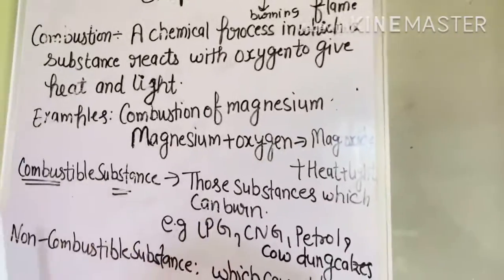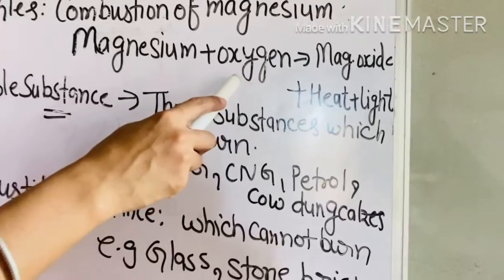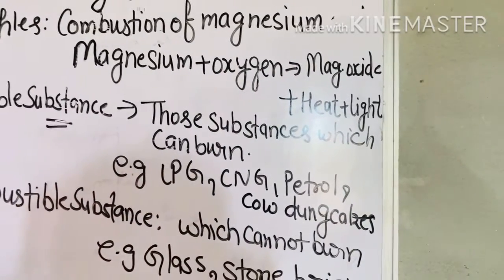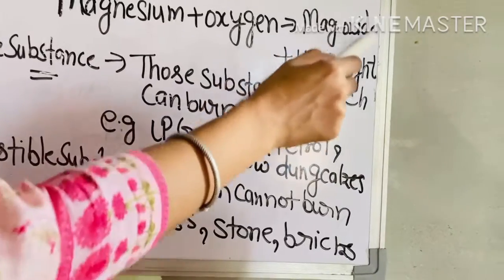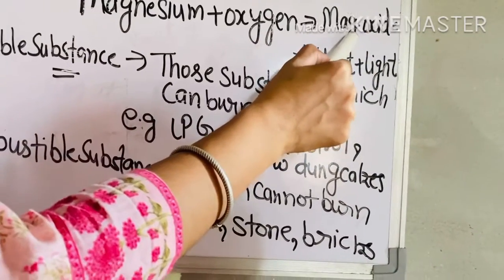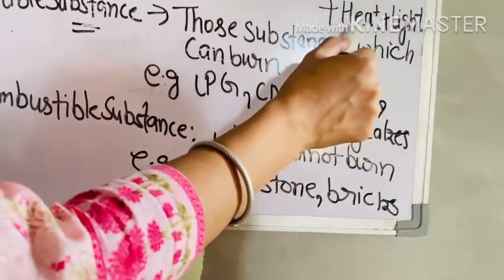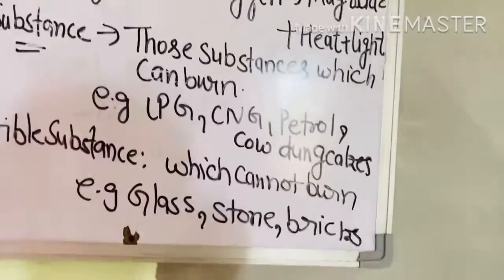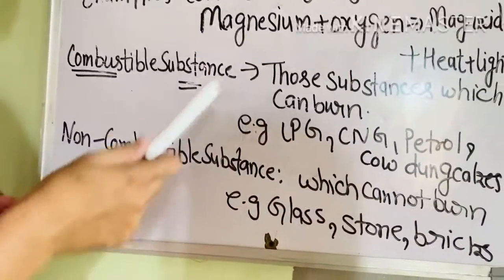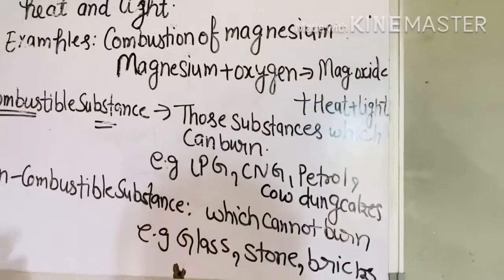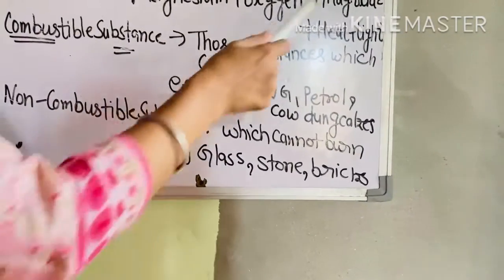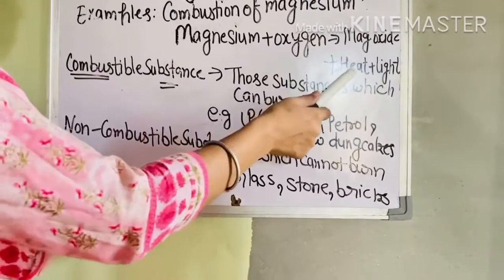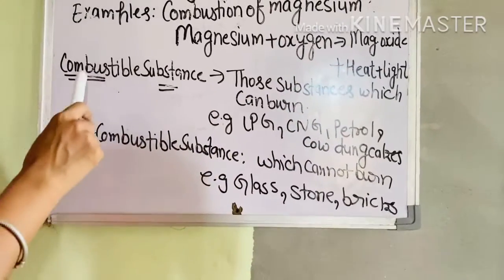For example, combustion of magnesium: magnesium reacts with oxygen to give magnesium oxide plus heat and light. Another example is combustion of charcoal: carbon reacts with oxygen to give carbon dioxide plus heat and light.